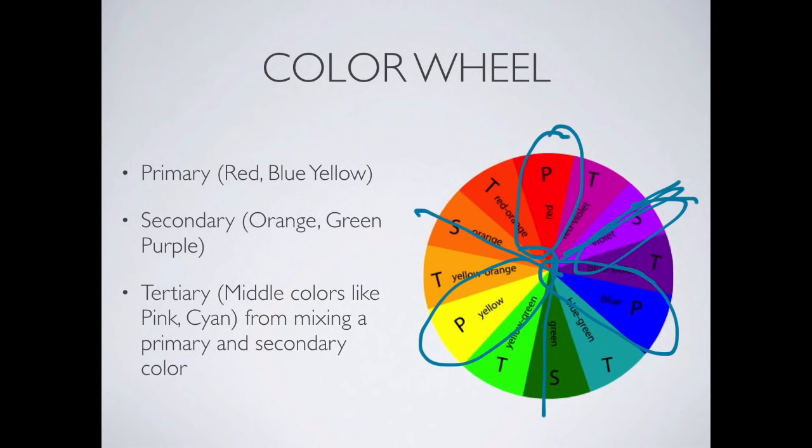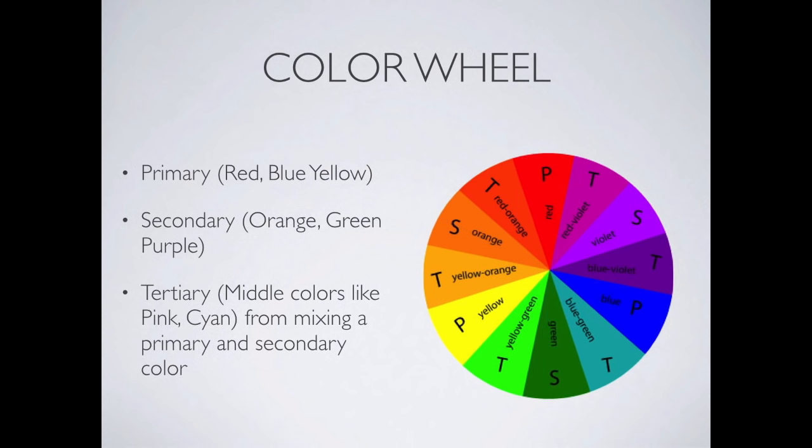If we take it a step further and go to a tertiary color, it's mixing a primary color with a secondary color. As we mix those two together, we get something like a red-orange or a yellow-orange, or a color with a fancier name. Those middle colors between a primary and a secondary give us that tertiary color.